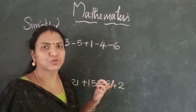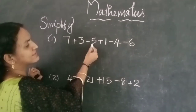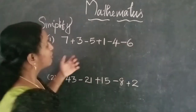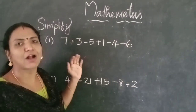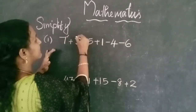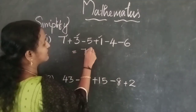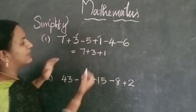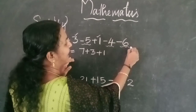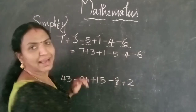Next we will practice some questions. Simplify: 7 plus 3 minus 5 plus 1 minus 4 minus 6. First, arrange the numbers according to sign. The positive numbers are 7, 3, and 1. Group them: 7 plus 3 plus 1. The negative numbers are minus 5, minus 4, and minus 6. Group them: minus 5, minus 4, minus 6.